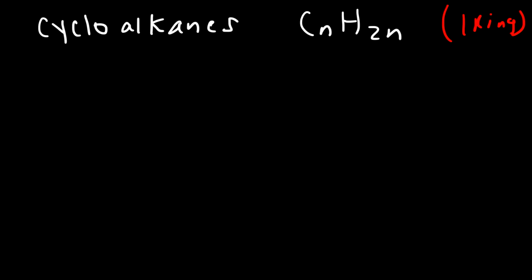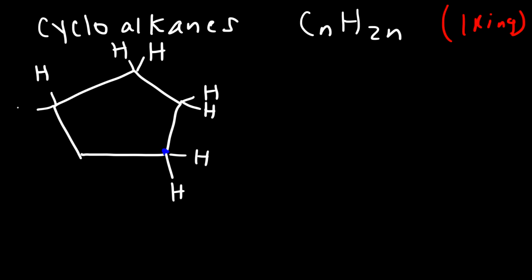So a good example will be cyclopentane, C5H10. Now, carbon can only form four bonds. And every carbon atom is attached to two other carbon atoms. So there's only space for two hydrogen atoms on each carbon. And so in this molecule, we have a total of five carbon atoms and 10 hydrogen atoms. So it's C5H10.